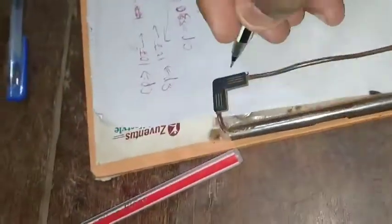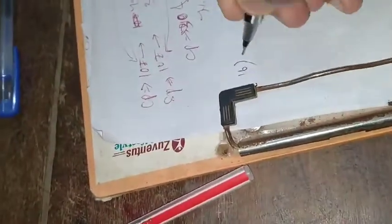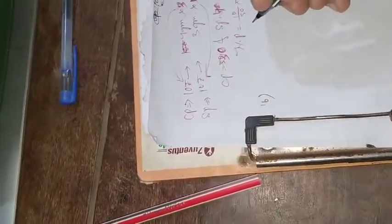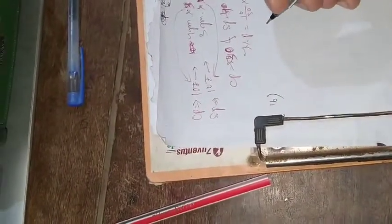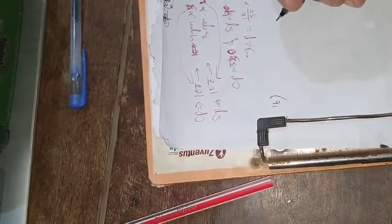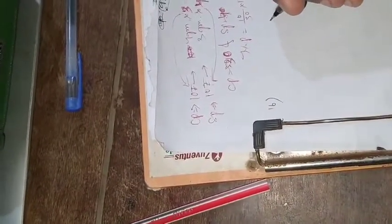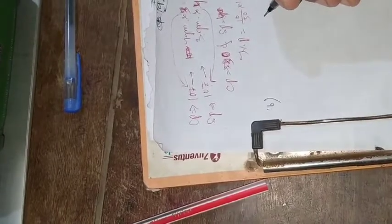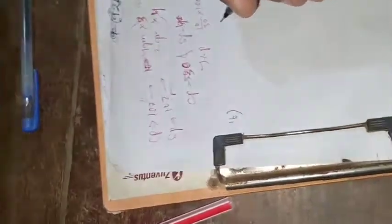A shopkeeper promises to sell his goods at 10% loss, but he uses 20% less weight. Find his actual profit percentage.